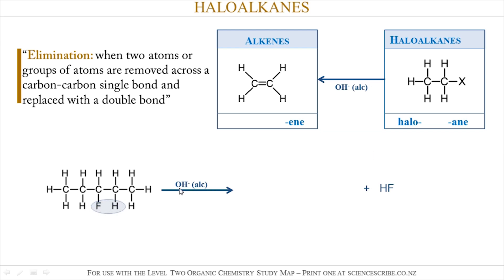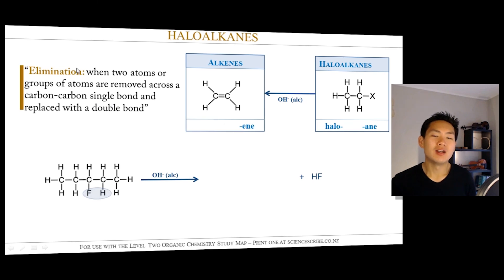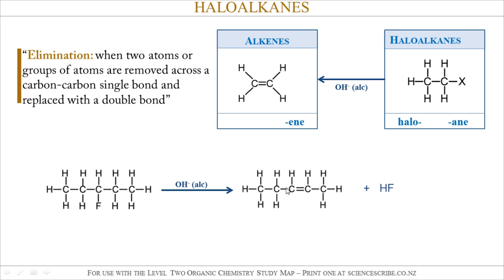When you do use your hydroxide in alcoholic conditions, it's called an elimination reaction, because in an elimination reaction all I'm doing is taking two atoms or groups of atoms across a carbon-to-carbon single bond, kicking them out and replacing it with a carbon-to-carbon double bond. So here I'm going to pick on my fluorine atom and choose to kick out a neighboring hydrogen atom off the neighboring carbon. Once the F and the H are kicked out, that forms HF, and all I'm left with is an empty space. To make sure that every carbon atom still has four bonds, I must have a double bond there.